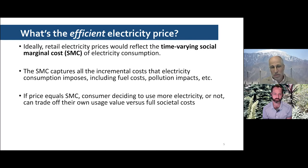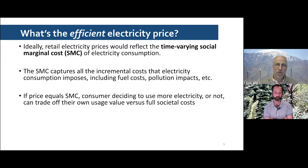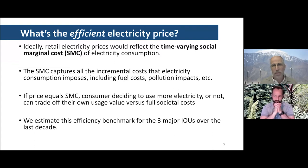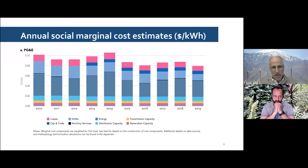If prices reflect social marginal costs, consumers can trade off their own usage versus societal costs and reach consumption choices that maximize value for society. We start by estimating this efficiency benchmark — the social marginal cost — for the three large investor-owned utilities in California, then compare it to price and think about how big the gap is and what we can do about it.